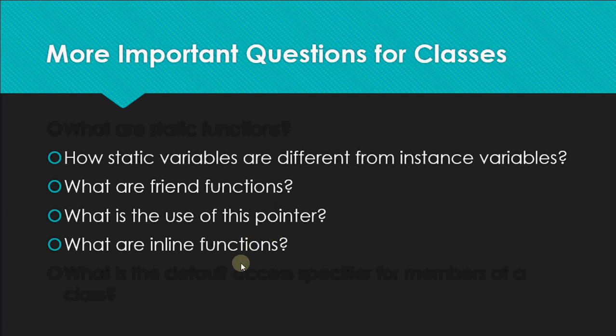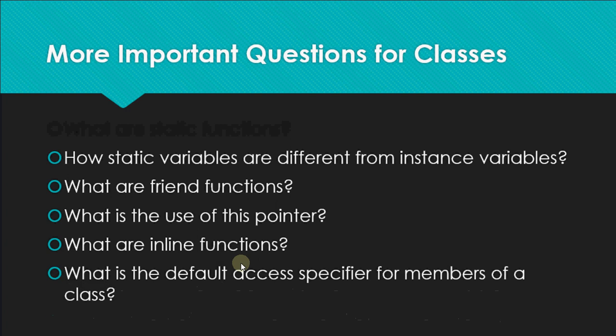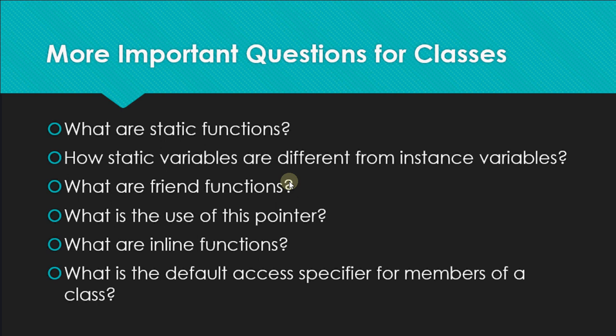What is the default access specifier for members of a class? If you don't write anything — private, public, or protected — what is the default visibility mode? The answer is private. If we don't mention anything, all members are taken as private.